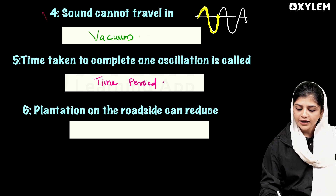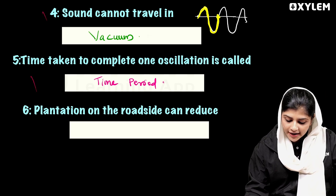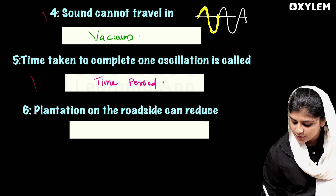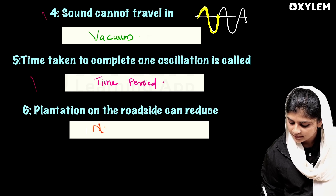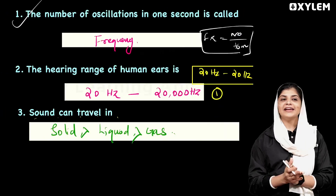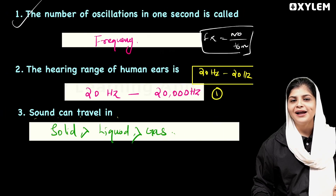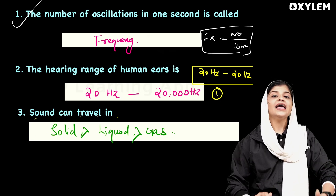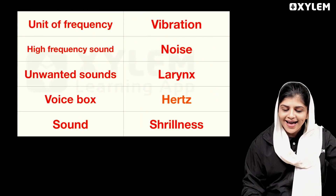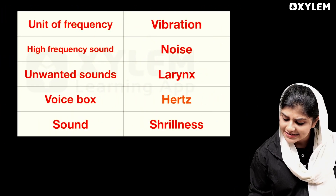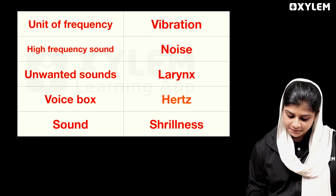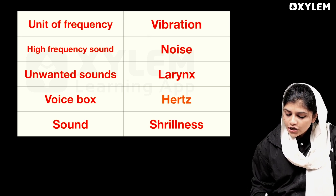The plantation on the roadside can reduce noise pollution — this is an important point from the textbook. Next: the unit of frequency is Hertz.